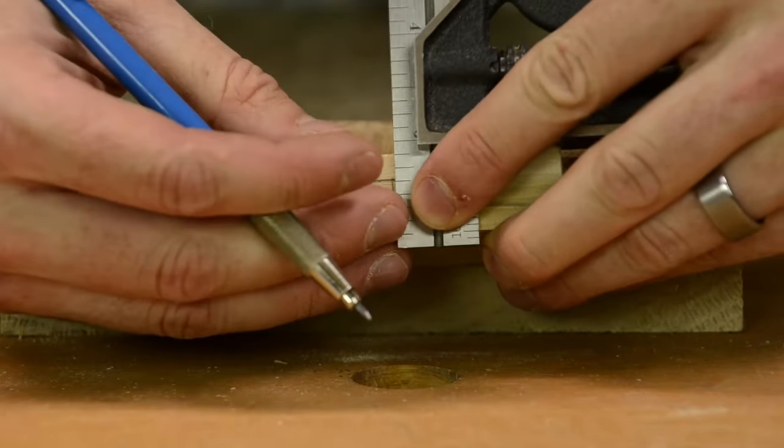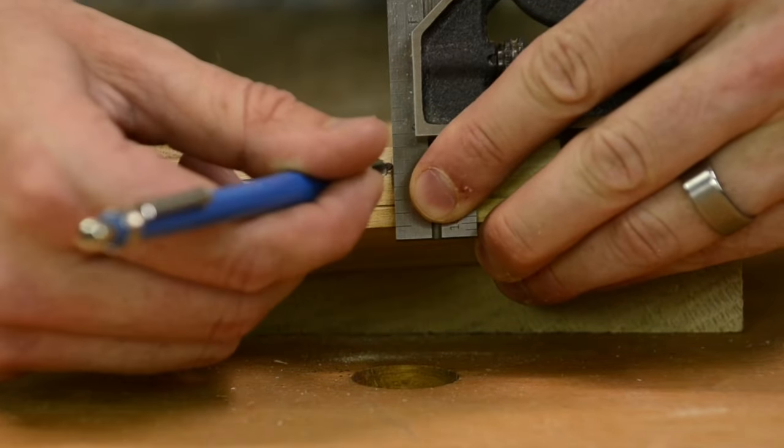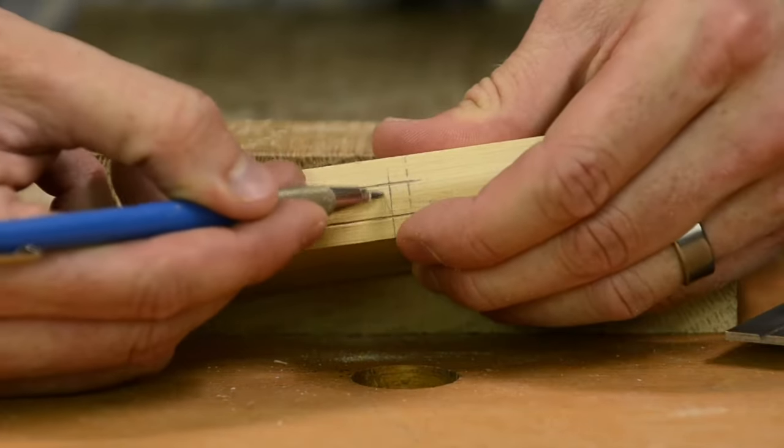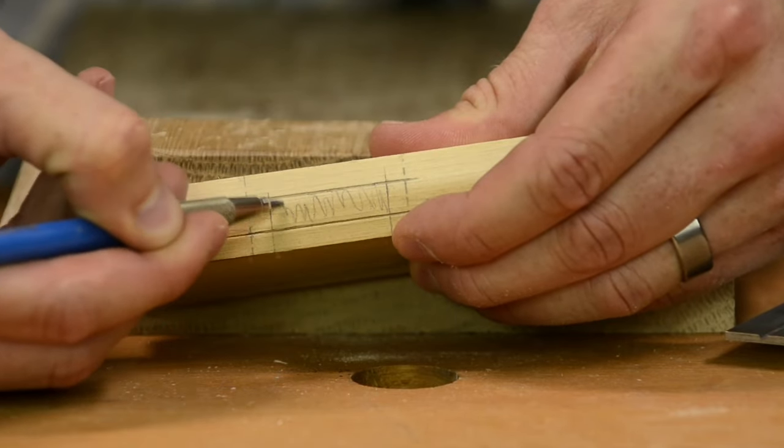And on the other side. This is the area that you will chop out with your mortising chisel.